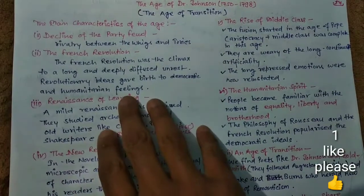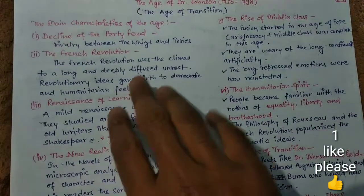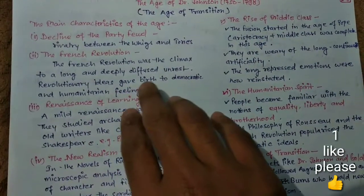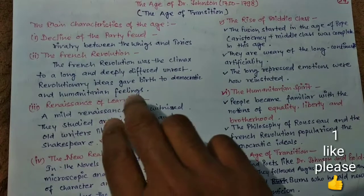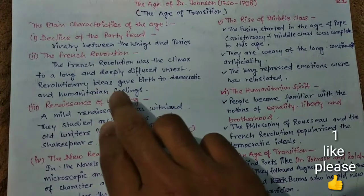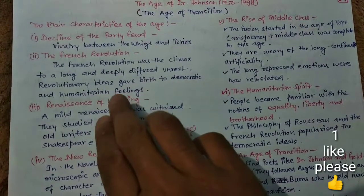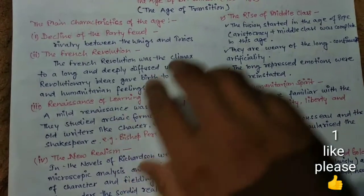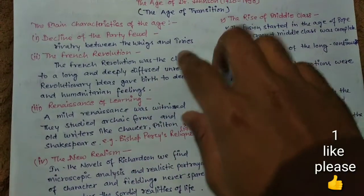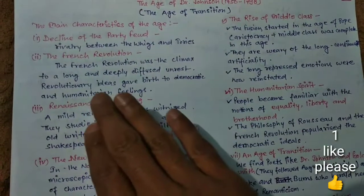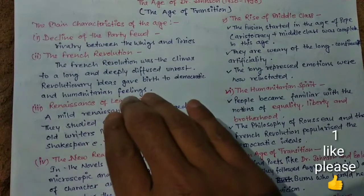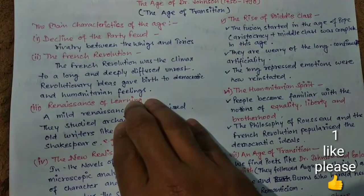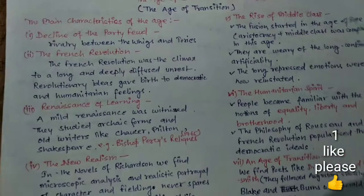The second characteristic is the French Revolution. The French Revolution was the climax to a long and deeply diffused unrest, and revolutionary ideas gave birth to democratic and humanitarian feelings. We got humanitarian feelings and some revolutionary ideas from the French Revolution.